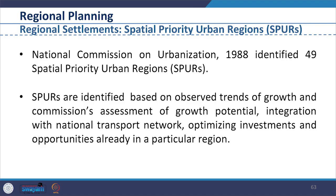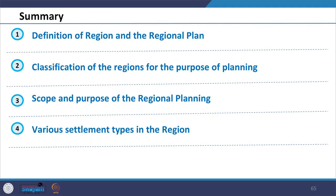Spatial Priority Urban Regions (SPURs) were identified by the National Commission on Urbanization in 1988, which identified 49 such regions. They are identified based on observed trends of growth, the commission's assessment of growth potential, integration with the national transport network, and optimization of investment and opportunities already present in a particular region.